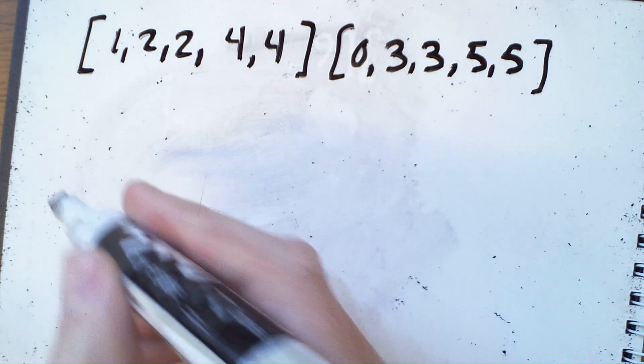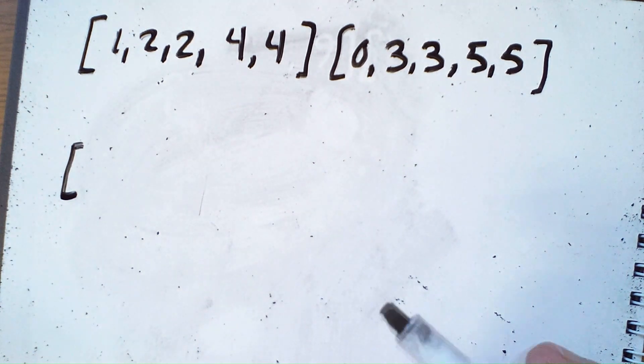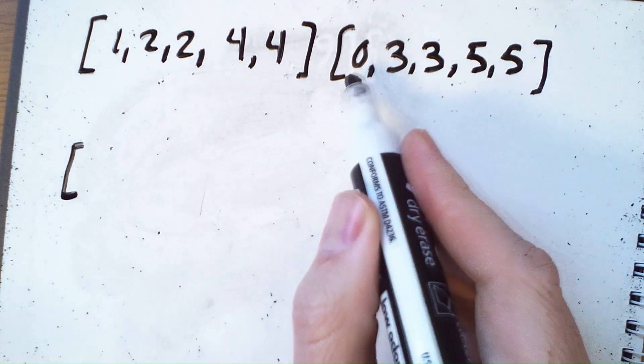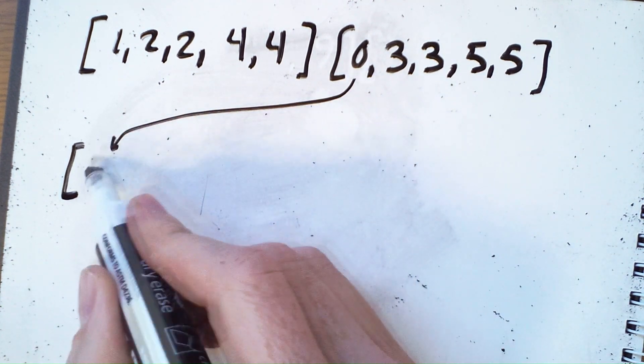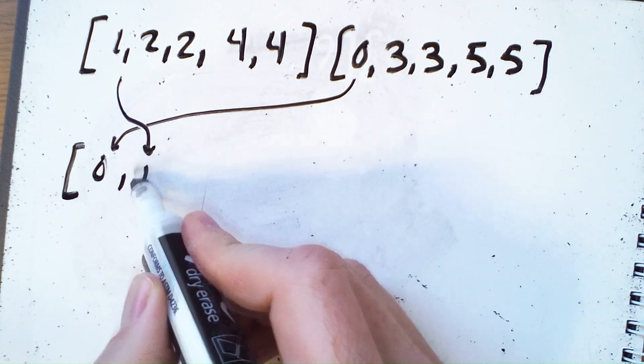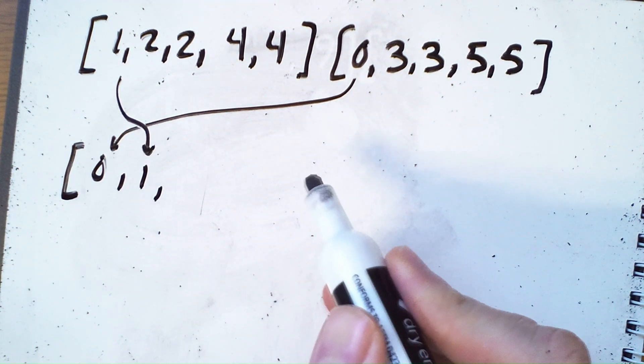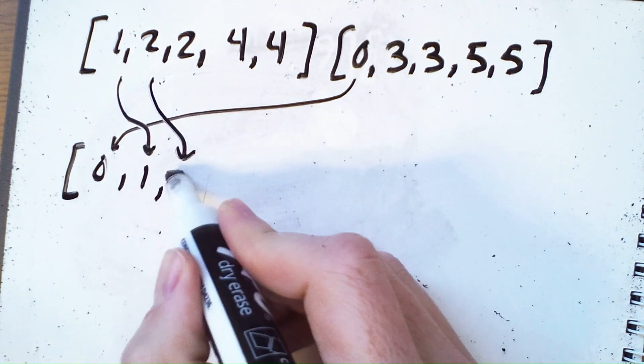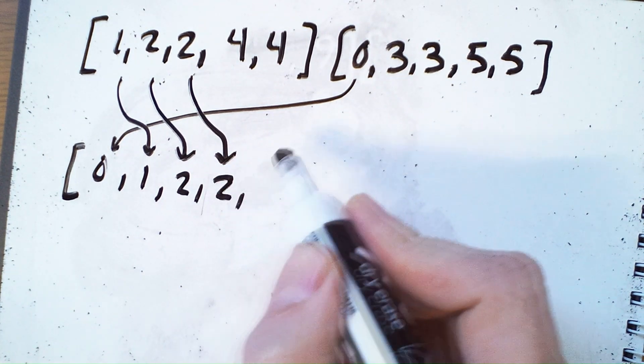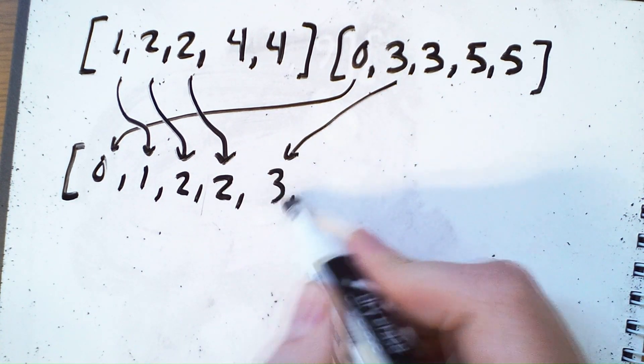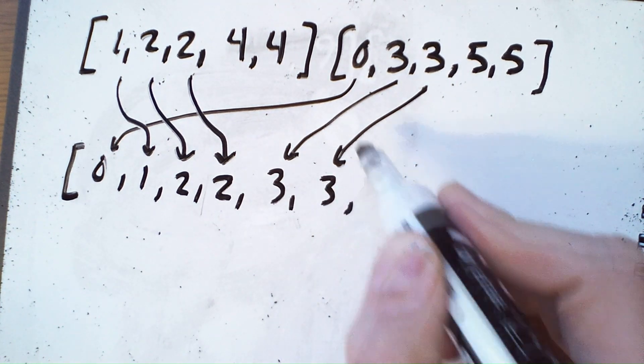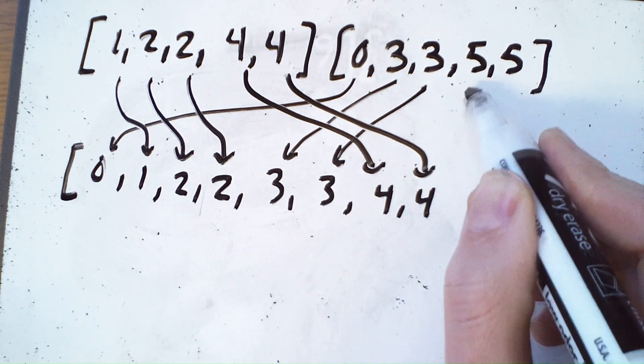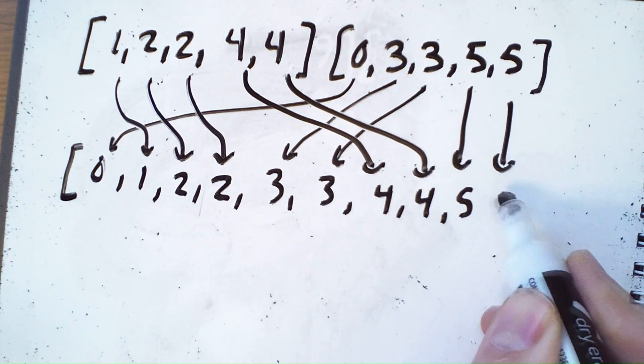One last little thing I'll point out is that while we're doing this merge operation, we could have arrays with duplicate values. So that zero would go here. This one would go here. And then because of these elements being next to each other, we would just keep copying the two and the two. And then we'd copy the threes from here, and here, and then these fours, and then these fives.